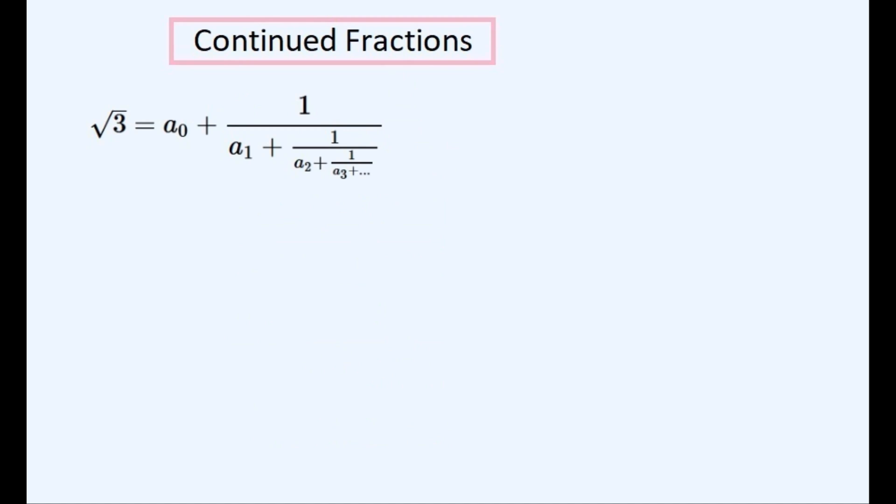And now to find the continued fraction of the square root of 3, which we'll be using as an example of how to find a continued fraction of a square root of any integer. We'll firstly set it out like this so as to see what it is that we're trying to find. And we can also write it out in this more compact form so as to more easily write it out once it has been found.